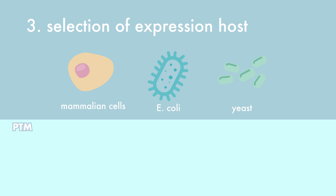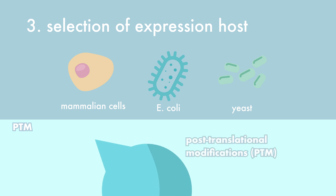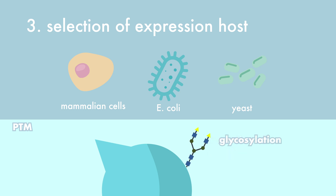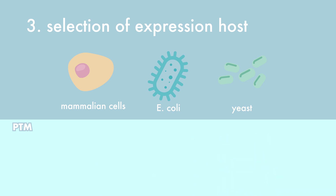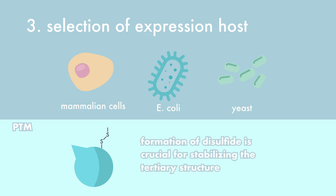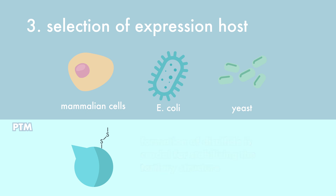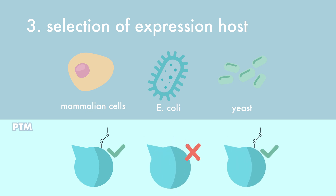Another important factor for the choice of the expression host are the post-translational modifications. Two important post-translational modifications are the formation of disulfide bonds and glycosylation. The formation of disulfide bonds between two cysteine moieties is crucial for stabilizing the tertiary structure of a protein. E. coli is not able to make disulfide bonds in a protein and already for this reason, E. coli is not very suitable for producing most of the target proteins.